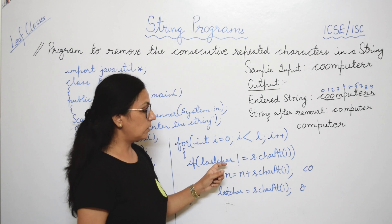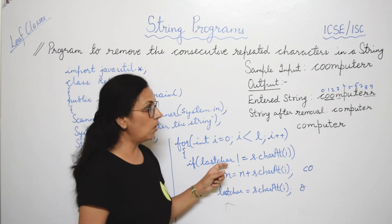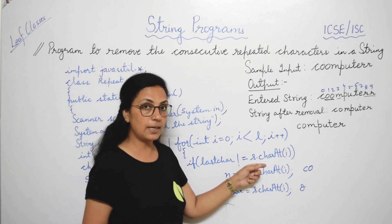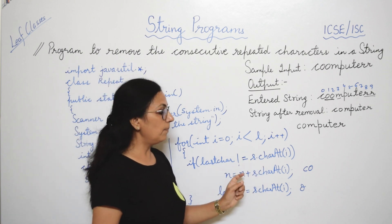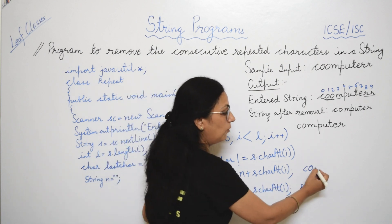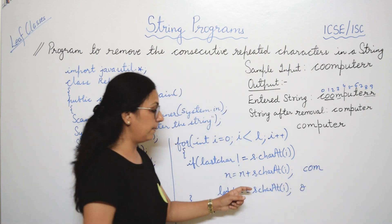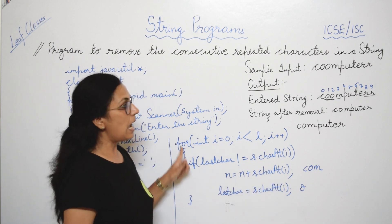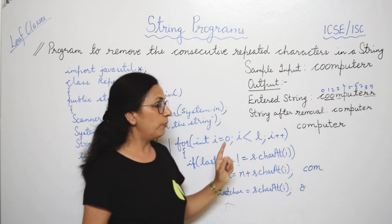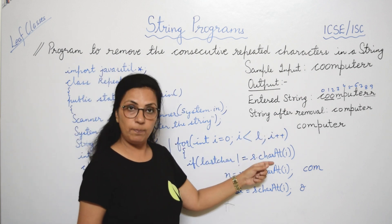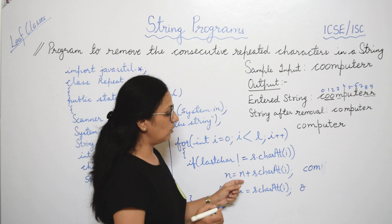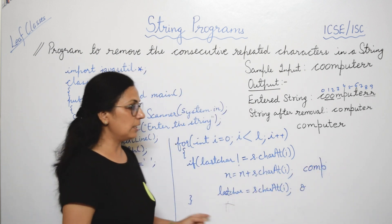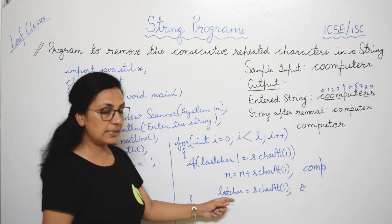lastChar = s.charAt(2), which is 'o'. Now i=3, s.charAt(3) is 'm'. 'o' is not equal to 'm' — condition true — so n = n + 'm'. Then lastChar = 'm'. i=4, s.charAt(4) is 'p': 'm' not equal to 'p', so 'p' is added. i=5, last is 'p', s.charAt(5) is 'u': not equal, so 'u' is added.